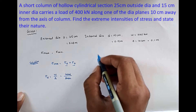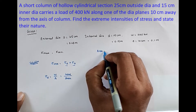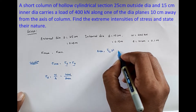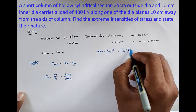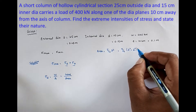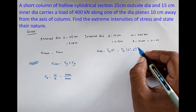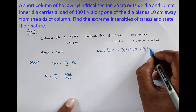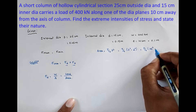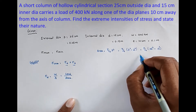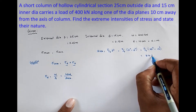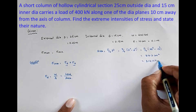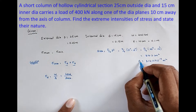First we find the cross-sectional area. For a hollow cylinder, area = (π/4) × (D² − d²) = (π/4) × (25² − 15²) = 314.2 cm², which converts to 314.2 × 10⁻⁴ m².